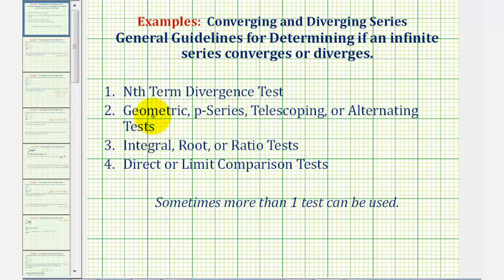I think for our series, the integral test is going to be the best option because the degree of the denominator is one degree higher than the degree of the numerator, which means we can probably find the integral using u-substitution. If the integral test doesn't work, our best bet would be to use either a direct or limit comparison test. But let's start by reviewing the integral test before we apply it.